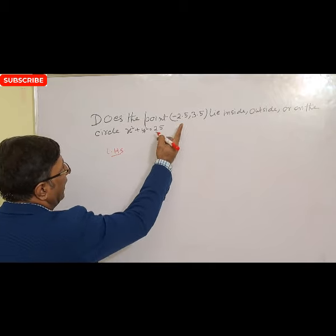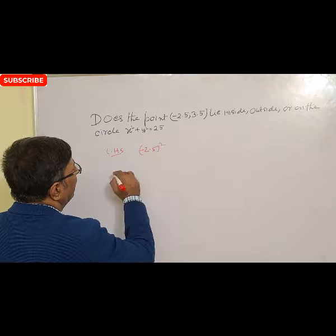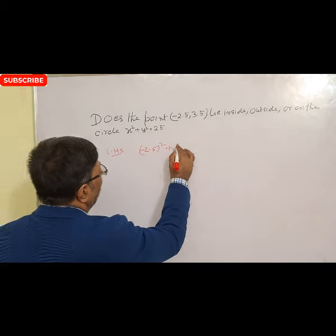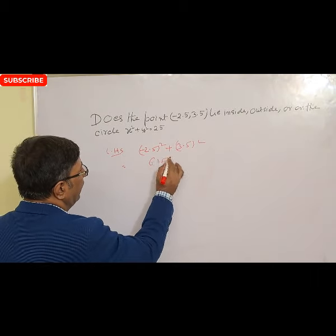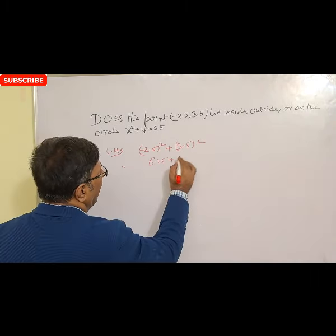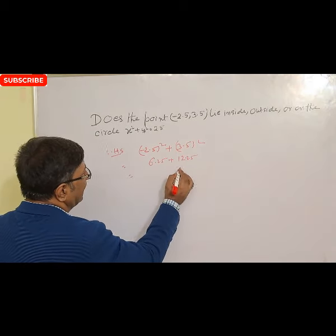So LHS equal to what? X is given minus 2.25, so (-2.25)² plus y is what, 3.5², so 2.25 squared is 5.0625. There is a decimal point. 3.5 squared is 12.25. There is a decimal point.